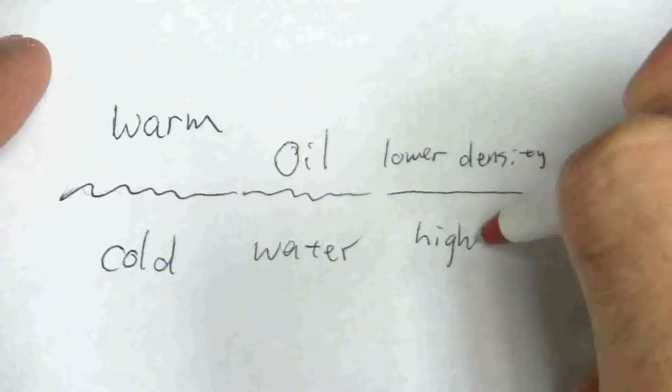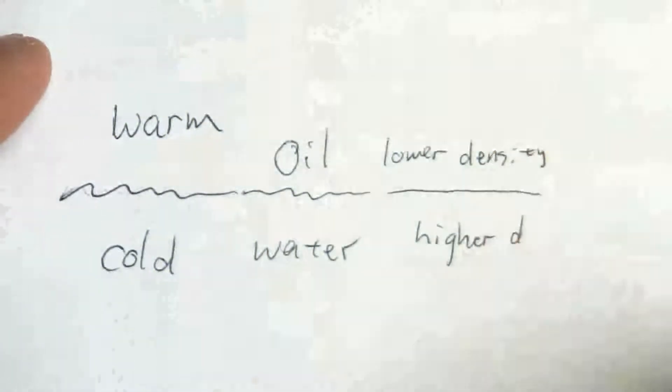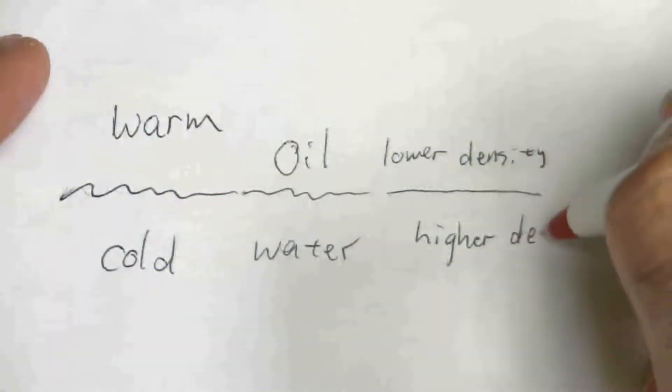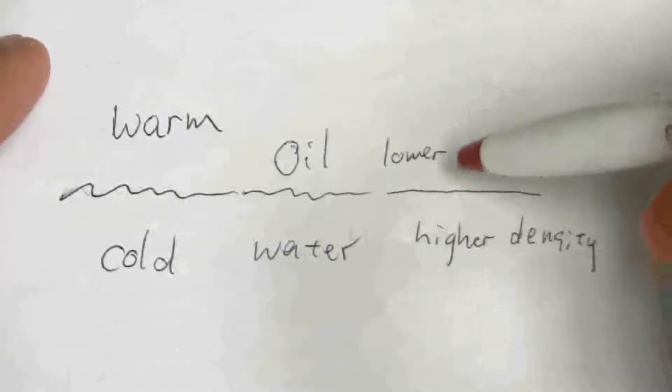There's a lower density, and so the higher density, it's heavier. It sinks down to the bottom. So the lower density always floats on top of the substance with higher density.